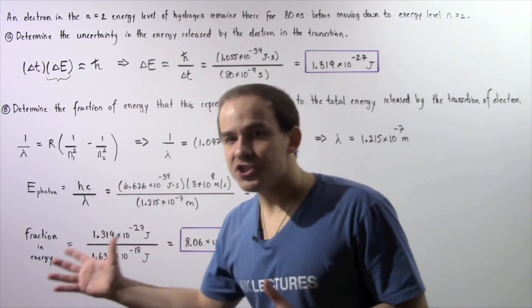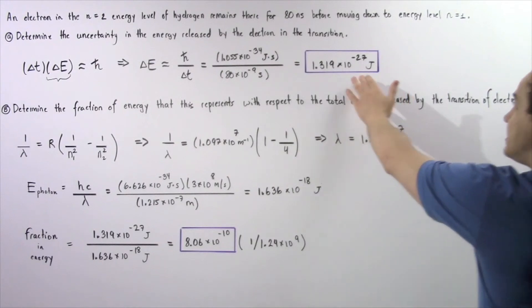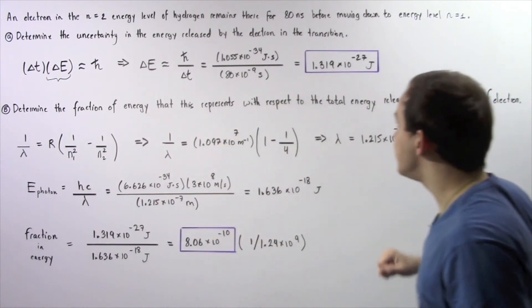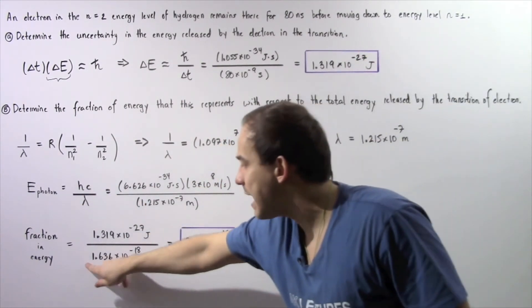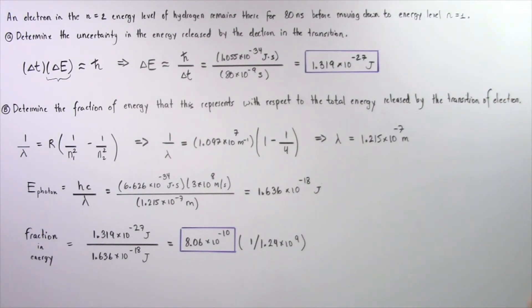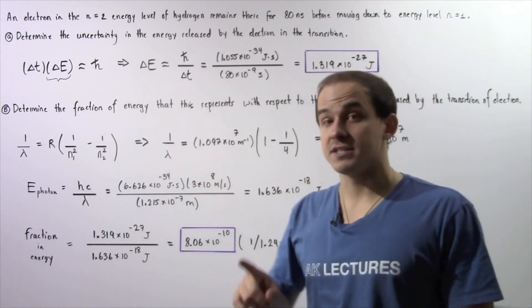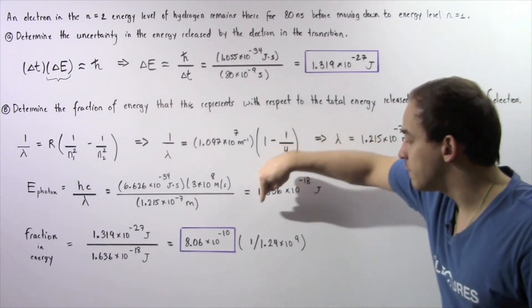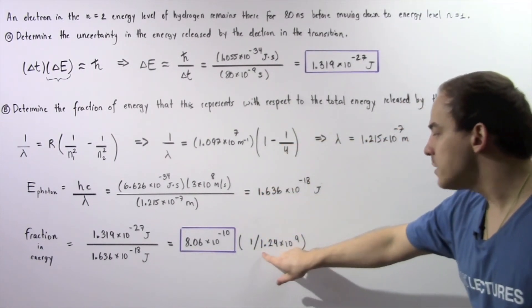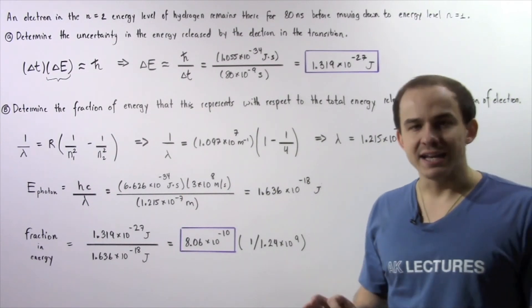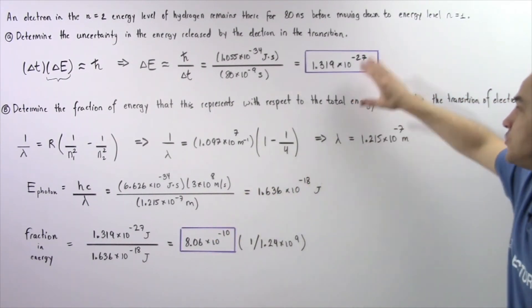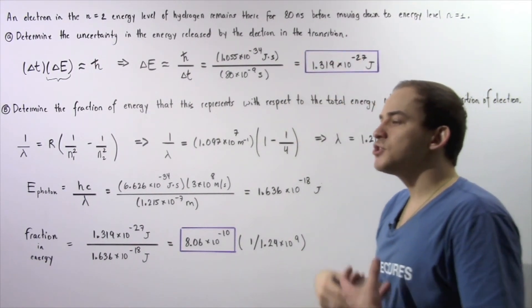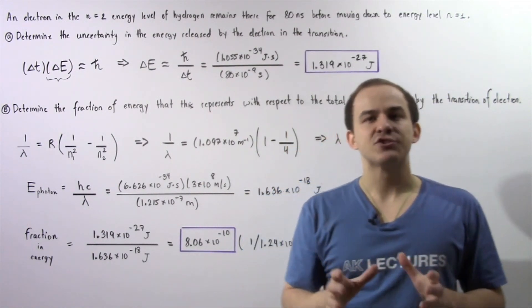Finally, to find the fraction that the uncertainty energy represents, we take delta E and divide it by the total energy released. So 1.319 times 10 to the negative 27 joules divided by 1.636 times 10 to the negative 18 joules gives us about 8.06 times 10 to the negative 10, which is approximately equal to a fraction of 1 divided by 1.24 times 10 to the 9. This is the fraction of energy that the uncertainty represents with respect to the total energy released during that transition.